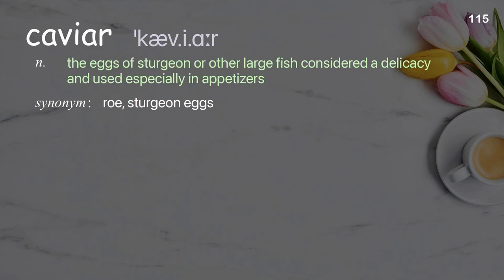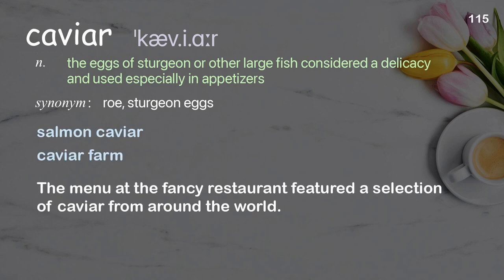Caviar: the eggs of sturgeon or other large fish, considered a delicacy and used especially in appetizers. Examples: salmon caviar, caviar farm. The menu at the fancy restaurant featured a selection of caviar from around the world.